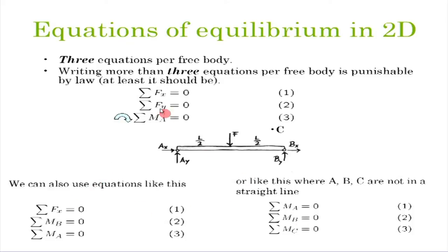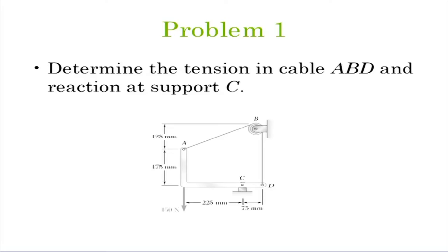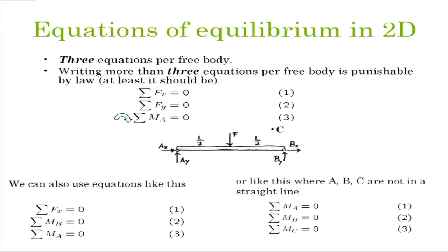An important point to emphasize to students: these three conditions are not independent of each other in the sense that writing more than 3 equations per free body is not allowed. Writing more than 3 equations for a single free body diagram is clearly wrong — in 2D the number of equations per free body is 3 and only 3, no more. Some equations may be trivially satisfied in special cases, but you cannot exceed three equations of equilibrium in 2D.